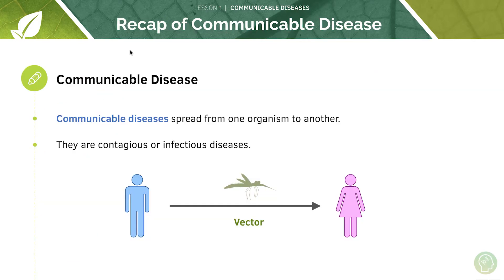First of all, let's have a look at what pathogens actually are. Pathogens are responsible for the spread of disease, and communicable diseases spread from one organism to another — that can be person to person, or animal to person or vice versa. These communicable diseases can be transmitted by vectors; for example, the mosquito is a vector for the transmission of malaria.